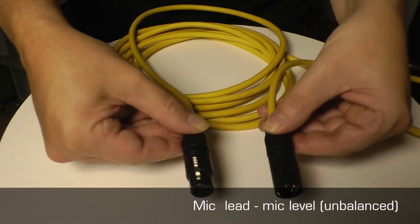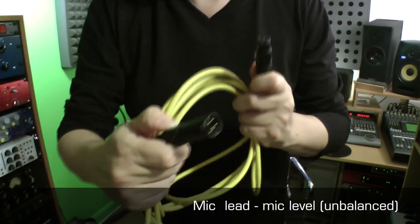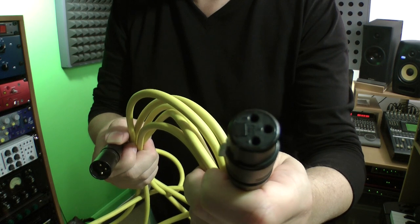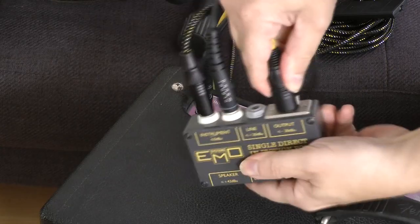A mic lead carries a mic-level electrical signal. It's balanced, of course, male-to-female XLRs. It's used to connect microphones to stage boxes and mic preamps, and DI boxes to mic preamps and mixers.